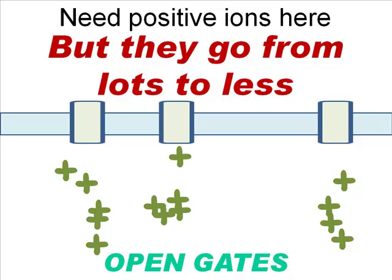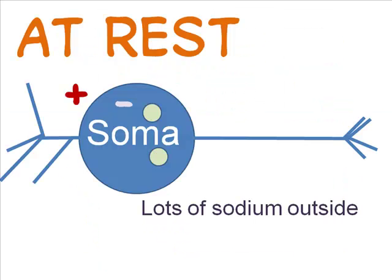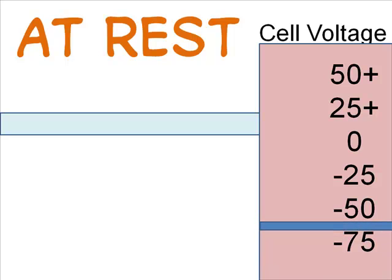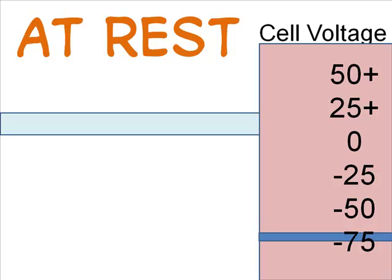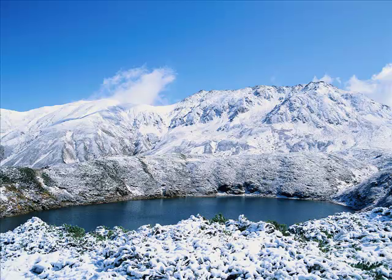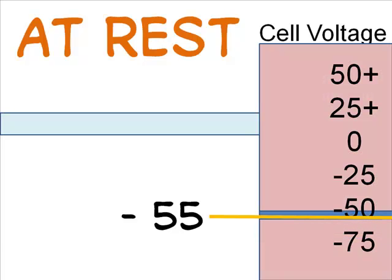At rest, there are a lot of sodium ions outside of the cell, and lots of potassium ions inside. As the dendrites are stimulated, a positive potential inside the cell increases. A neuron is typically about negative 70 millivolts. A little shift in the positive direction, to negative 65 or negative 60, doesn't cause any major change — it's like going from minus 75 degrees to minus 60 degrees, it's still really, really cold.